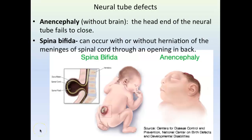Now let's talk about neural tube defects. When those two edges of the neural folds meet, they seal, allowing normal development of the brain and spinal cord. However, if the tube fails to close in the area where the brain develops, you could have a condition called anencephaly. The more common condition is where the tube doesn't completely seal where the spinal cord develops — that's called spina bifida.